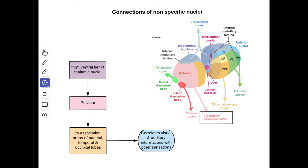Next we'll see the connections of the pulvinar. From the ventral tier thalamic nuclei the afferent goes to the pulvinar. From here the efferent goes to the association areas of the parietal, temporal, and occipital lobe. The function is it correlates the visual and auditory information with other sensations.